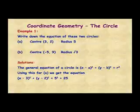If we substitute in the values then for a, b, and r for part a, we get the equation x minus 3 squared plus y minus 2 squared equals 5 squared and 5 squared equals 25.